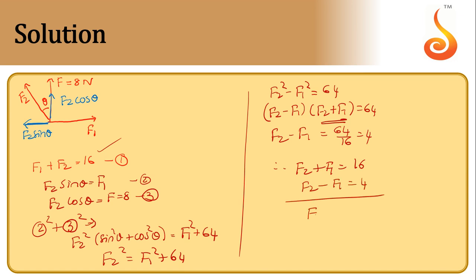If we add them, we get F2 is equal to 10 newtons, and F1 is equal to 16 minus 10, so 6 newtons. So F2 is 10 and F1 is 6.